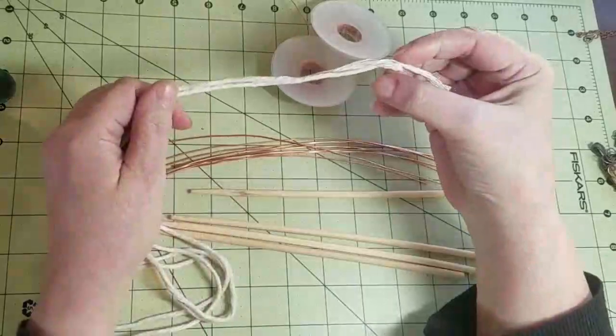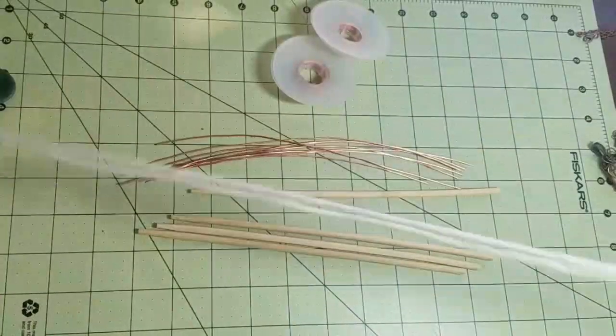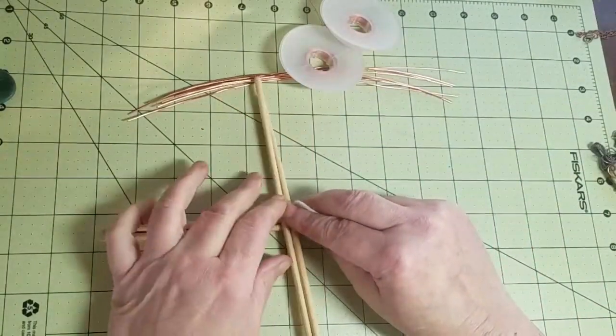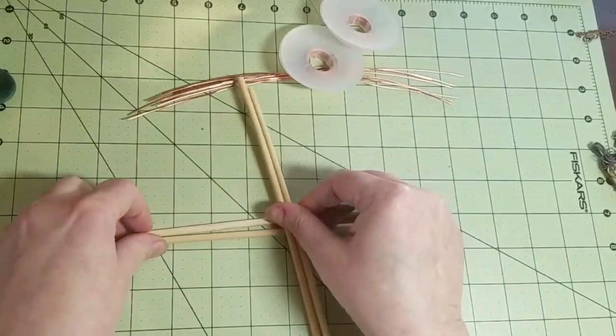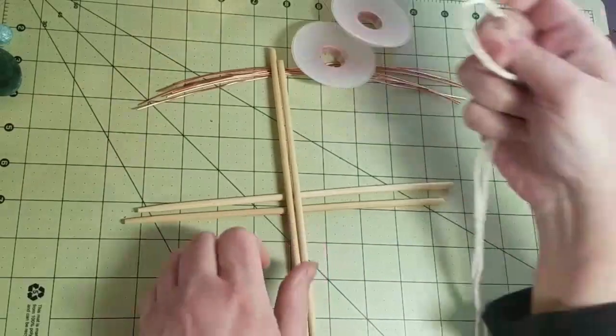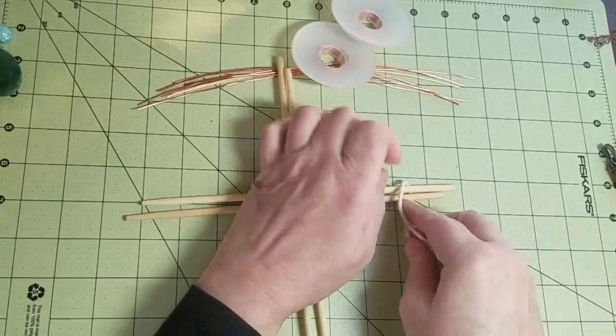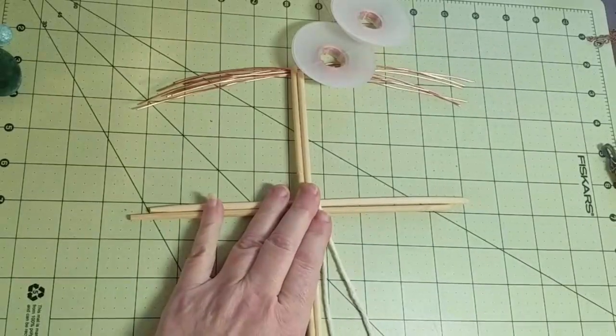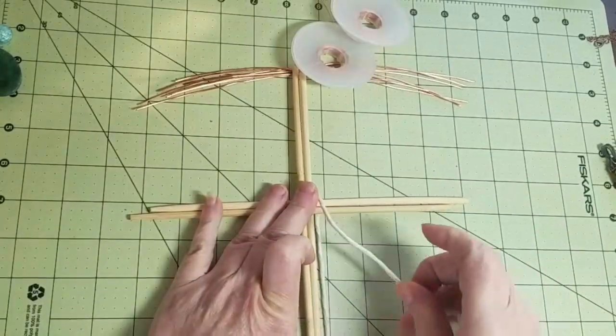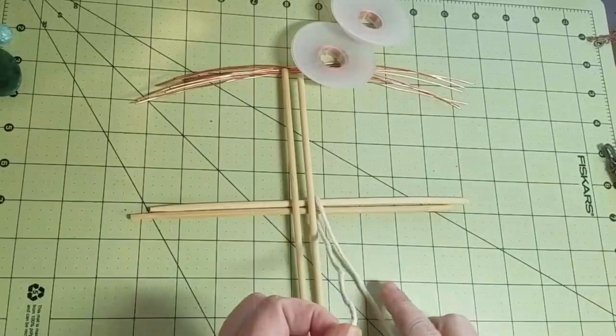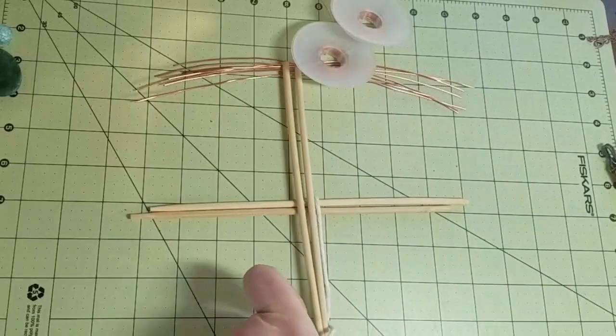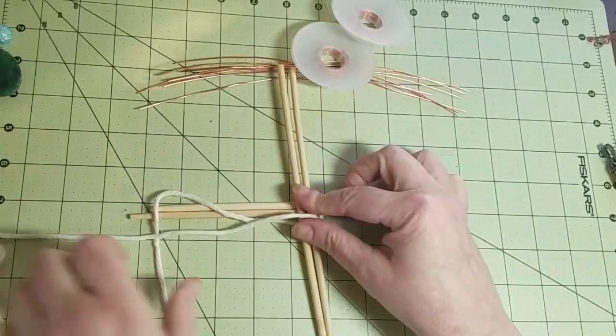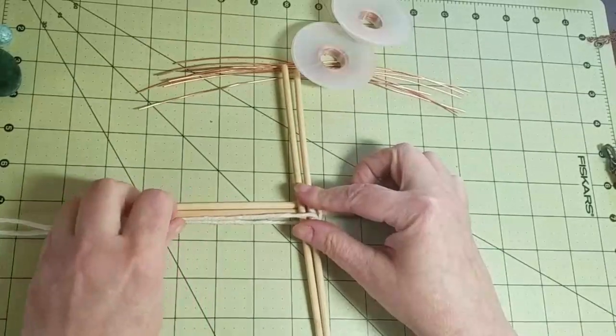I think this is called a single rope weave. You're gonna take your weaving wire and find the center right here. However many core wires you're gonna start with, I wouldn't go more than four, but we're gonna do two on this one and make a plus sign. You've got a top wire and a bottom wire. The top wire is gonna come down underneath the weaving wire and the core wires.